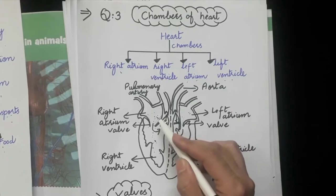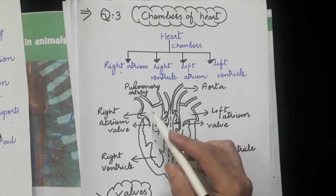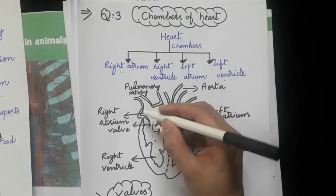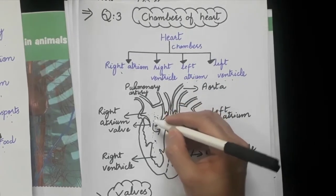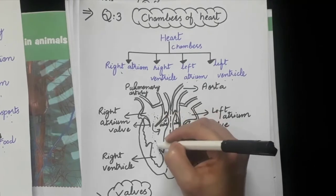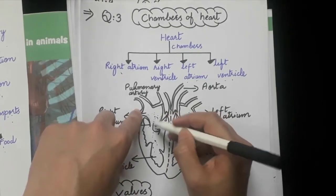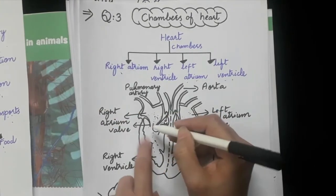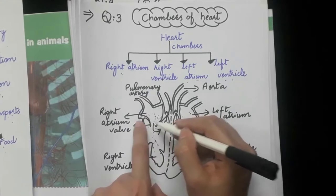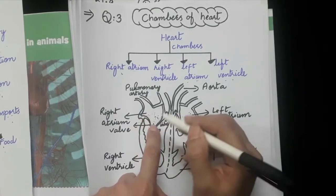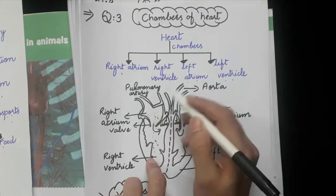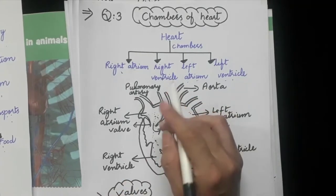These flaps are valves which keep the blood moving in one direction and prevent backflow. As your heart pumps, blood enters the right atrium, then goes to the right ventricle. When blood moves into the right ventricle, these valves close so that the blood does not flow back and stays moving in one direction.